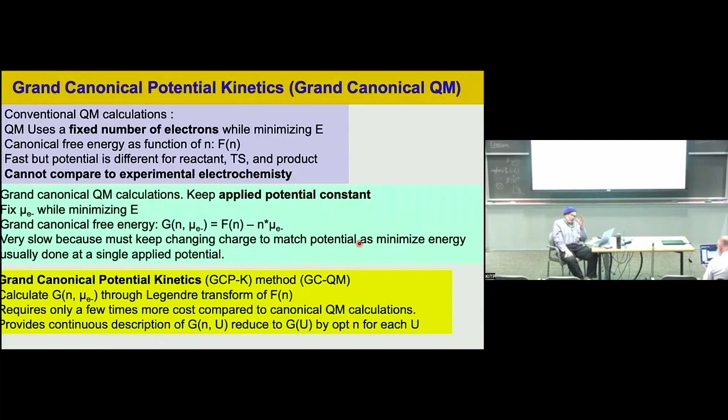We have to do this at constant potential because that's the way the experiments are done. The normal quantum mechanics calculations are at constant electron count. That's not good enough because at constant electrons, the reactants, the transition state, and the product are all at different potentials. We need the same potential — we need to keep the chemical potential constant during the reactions.